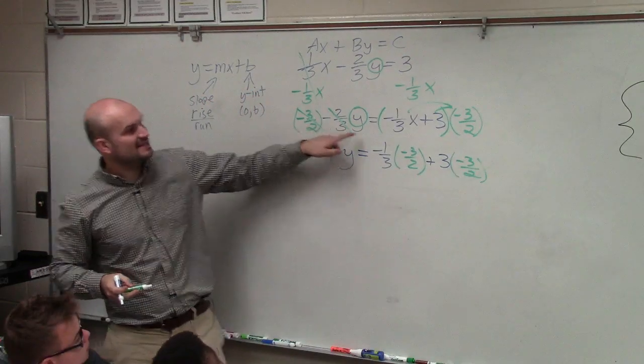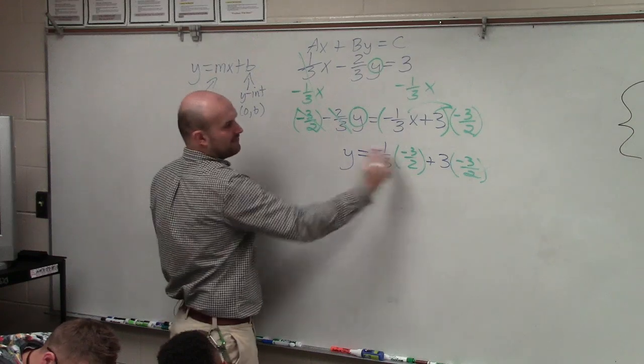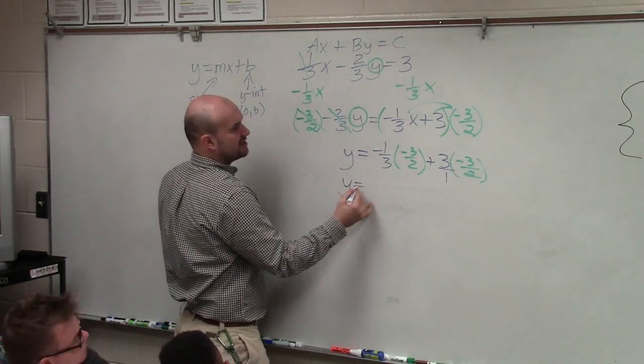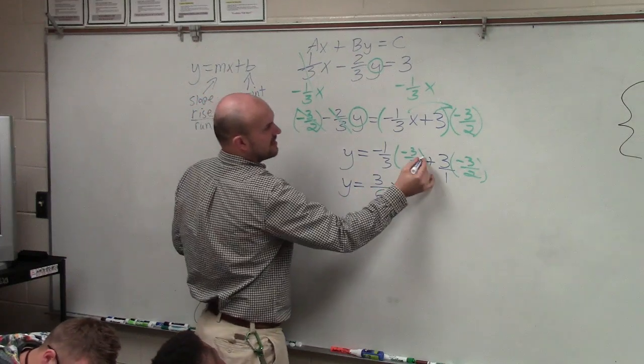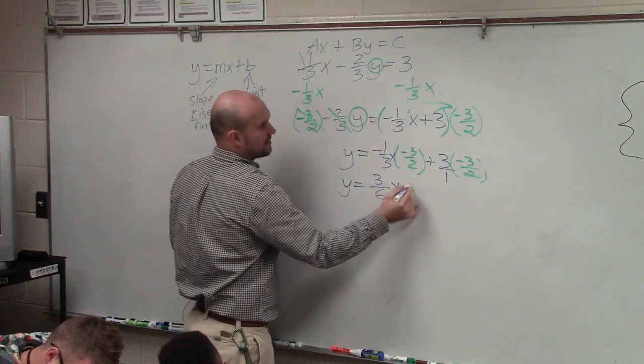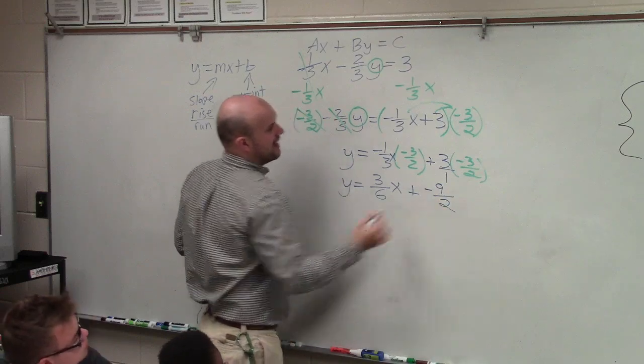Even if you were to divide this, you would have to divide both of those by that term. So now, when I multiply fractions, I just multiply straight across. So my final answer is y equals positive three-sixths. Oops, that's an x right there. Three-sixths x plus this becomes a negative nine-halves.